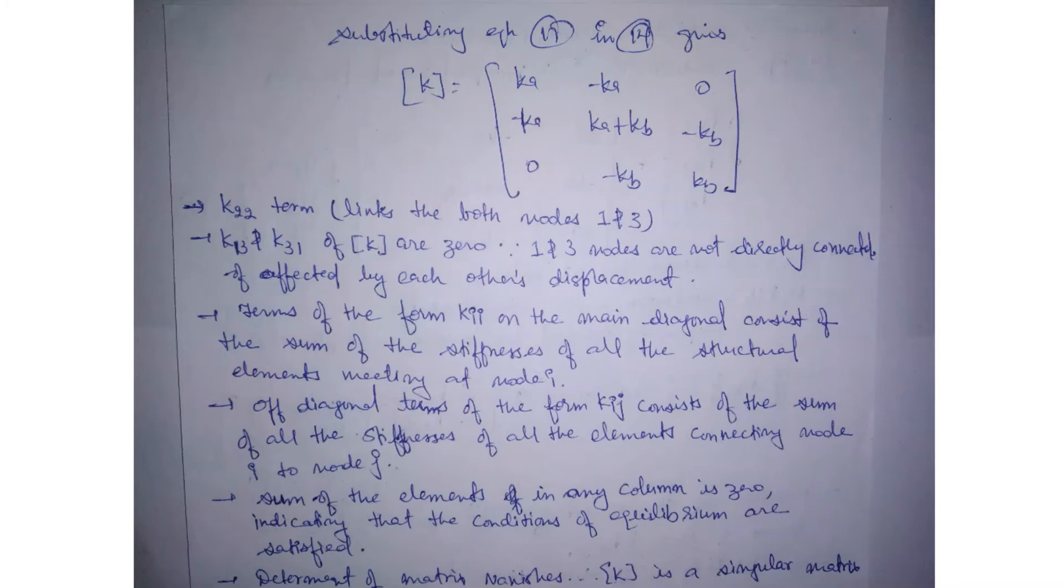Similarly, the terms K13 and K31 are both 0. Here K13 and K31 are both 0 because nodes 1 and 3 are not directly connected or affected by each other's displacement. Terms of the form Kii on the main diagonal consist of the sum of the stiffness of all structural elements meeting at node i, and off-diagonal terms of the form Kij consist of the sum of all the stiffness of the elements connecting node i to j.